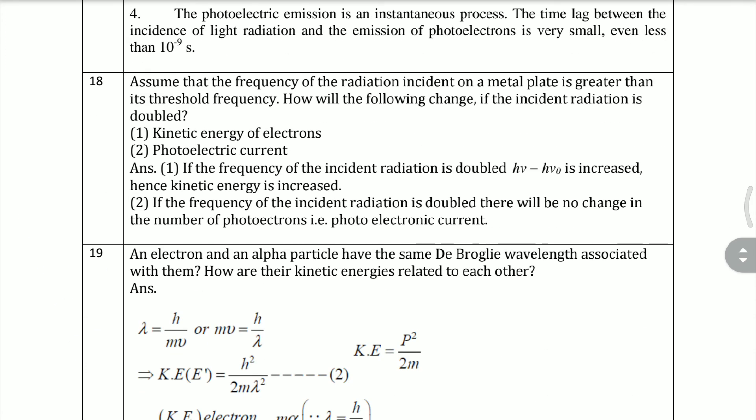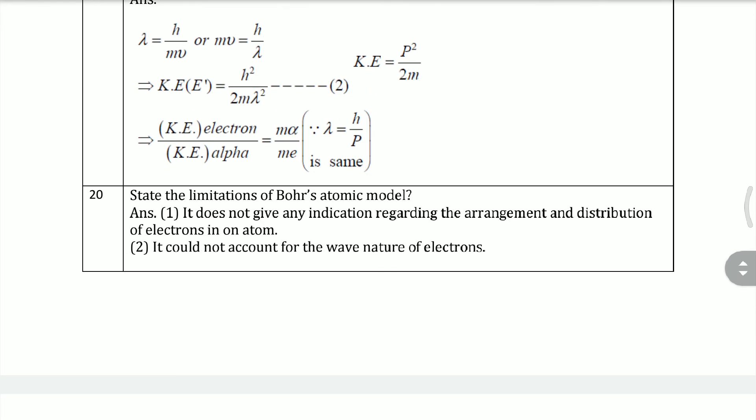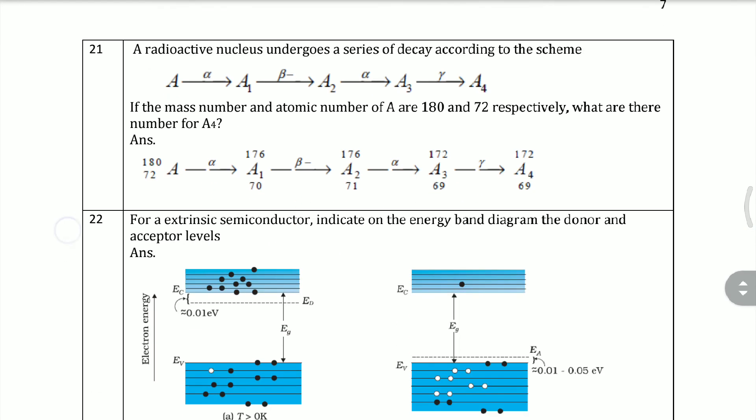State the limitations of Bohr's atomic model. Bohr's atomic model has limitations: it does not give any indication regarding the arrangement or distribution of electrons in an atom, and it could not account for the wave nature of electrons. Second: radioactive nucleus undergoes a series. You need to know how radioactive nucleus decays - alpha, beta, gamma. In this way the question will be solved.